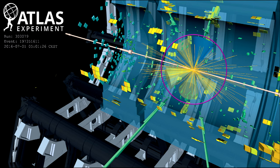The green and blue cones show jets of particles produced in the collision. The green boxes show the energy deposits in the electromagnetic calorimeter. The yellow boxes show the energy deposits in the hadronic calorimeter.